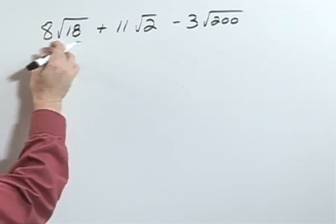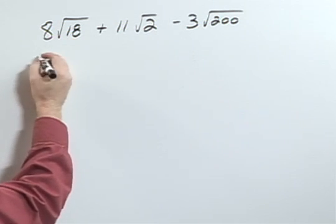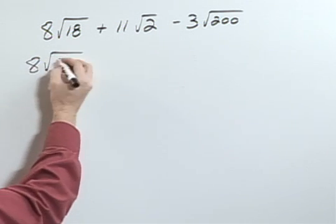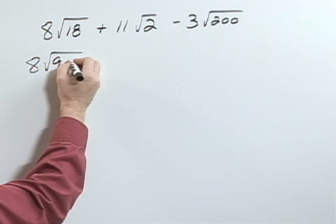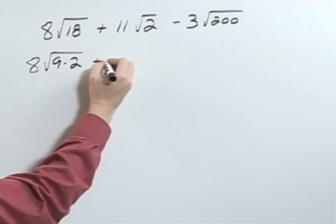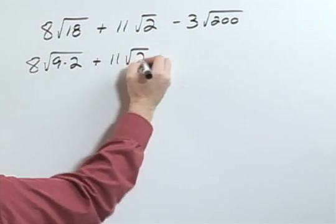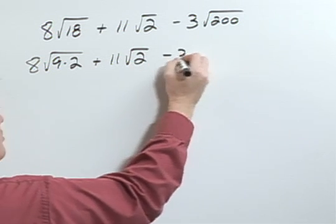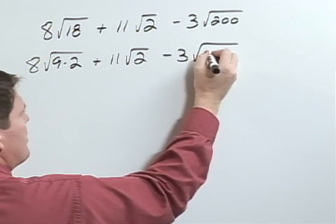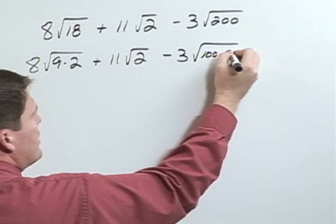For instance, 8 times the square root of 18 can be written as 8 times the radical 9 times 2 plus 11 times the square root of 2 minus 3. And then 200 can be written as 100 times 2.